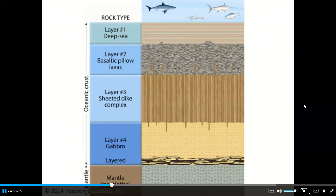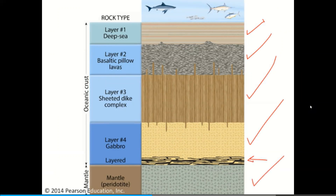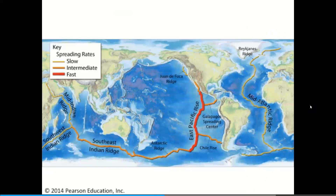This is where the ophiolite sequence comes from — a cross-section through the ocean floor. You can see deep-sea sediments on top, then pillow lavas, then the sheeted dike complex where cracks got filled with lava and sealed shut. Below that is gabbro, the intrusive version of basalt, which may be layered at its base. Underneath that is the mantle: peridotite, an olivine-rich intrusive igneous rock.